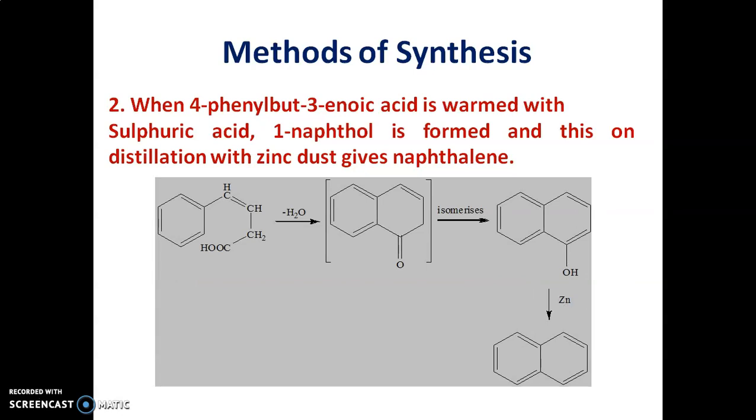The second method for synthesis of naphthalene includes when 4-phenylbutanoic acid is warmed with sulfuric acid, alpha-naphthalenone is formed and this alpha-naphthalenone on further distillation with zinc dust gives naphthalene. That is the second method for synthesis of naphthalene.